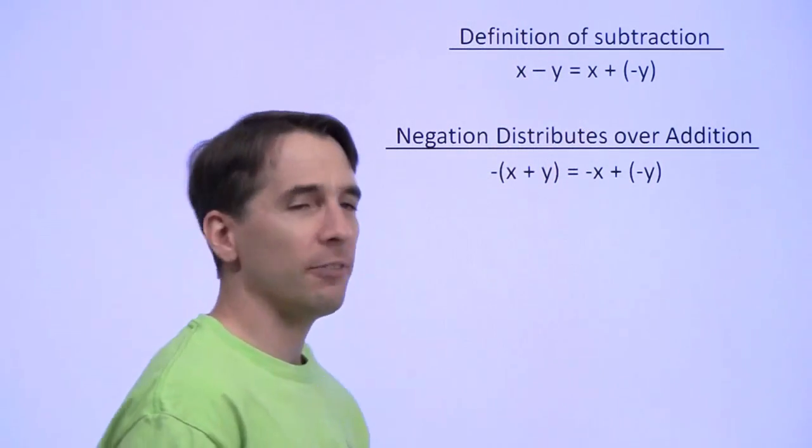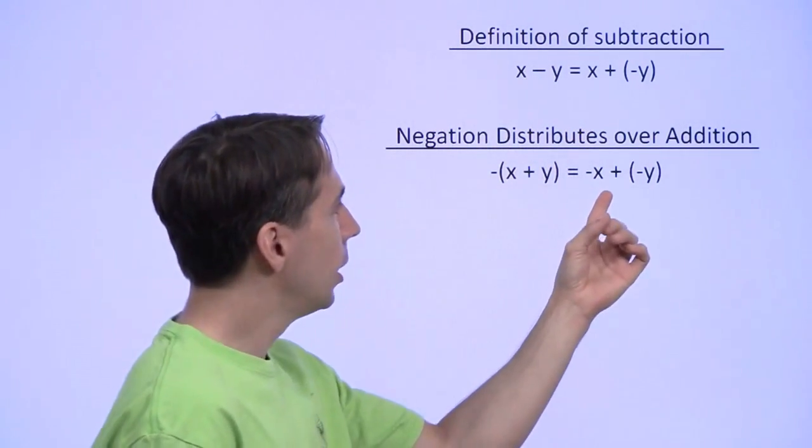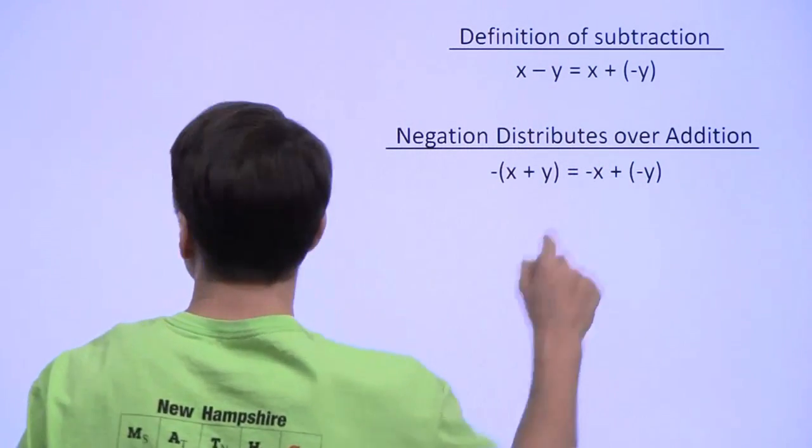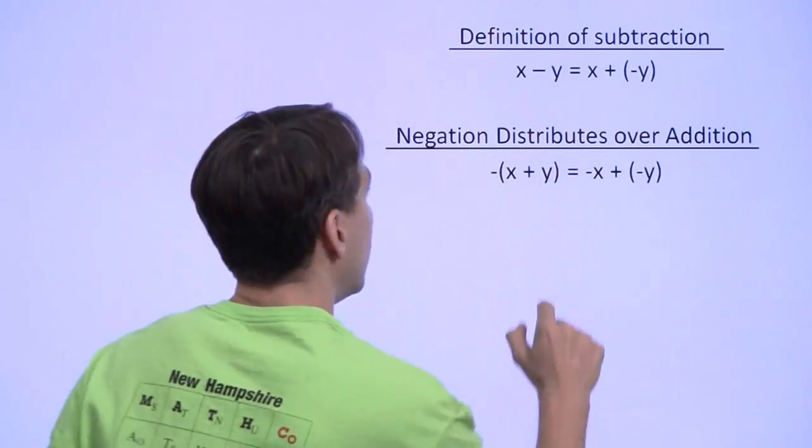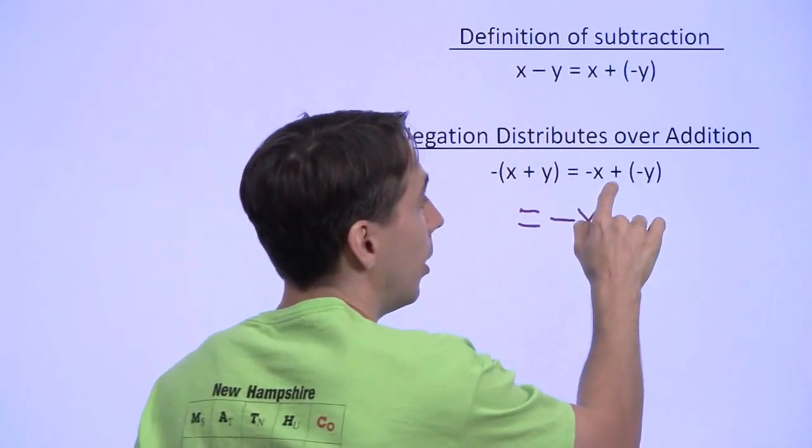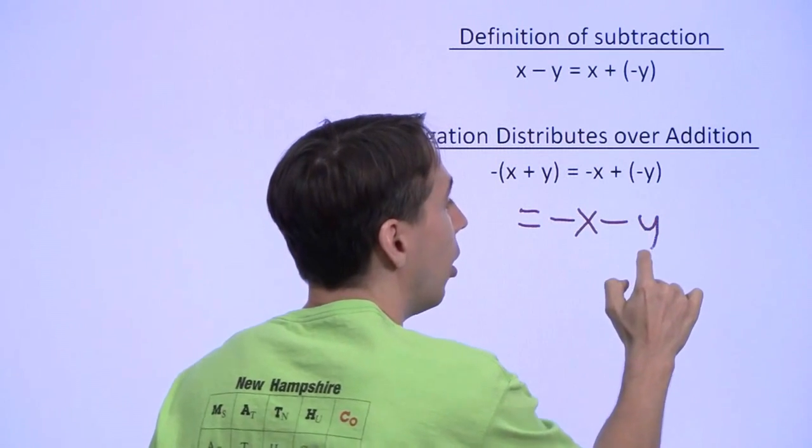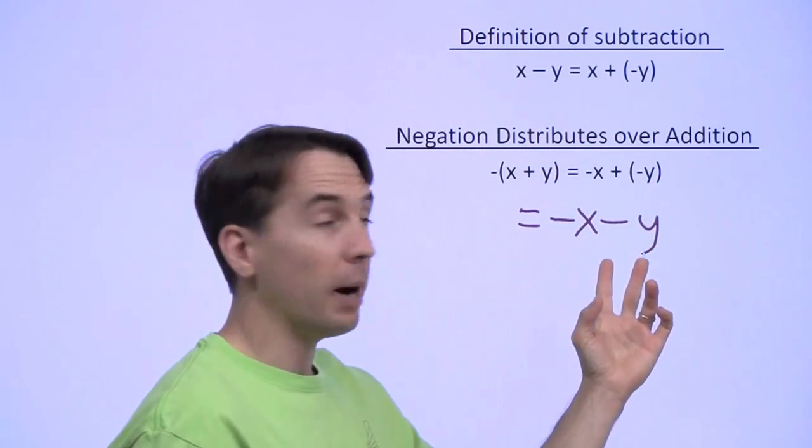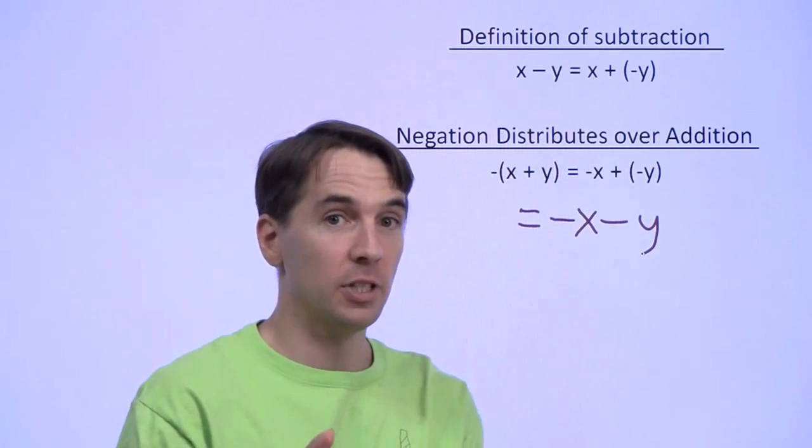If we look back at our definition of subtraction, we see the addition of a negation is a subtraction. So I can write this side over here as the negation of x minus y. All I've done here is taken this plus the negation of y, turned it into a minus y, because that's our definition of subtraction.